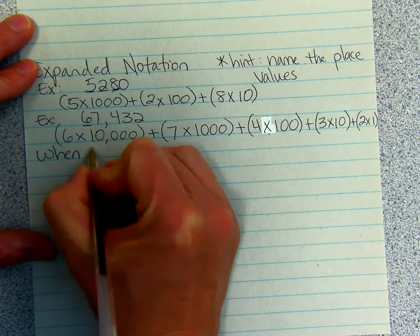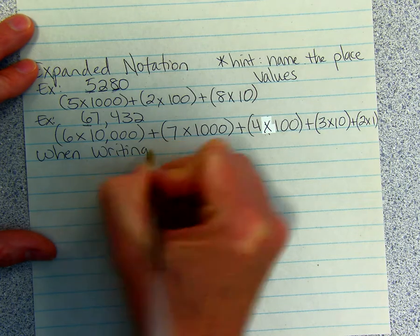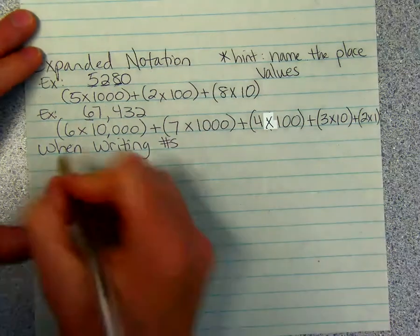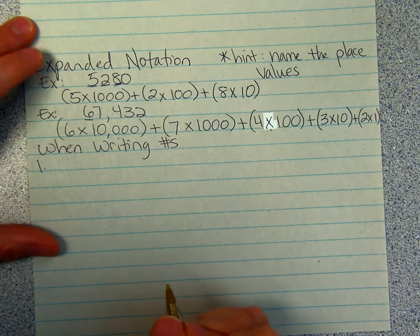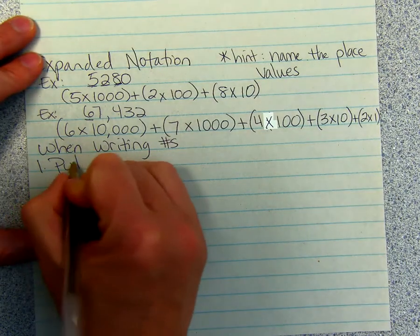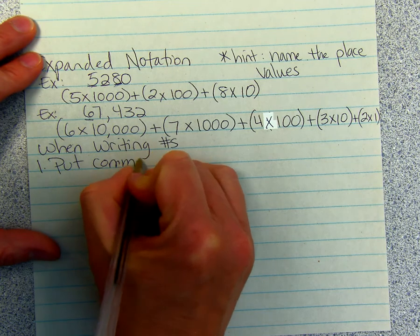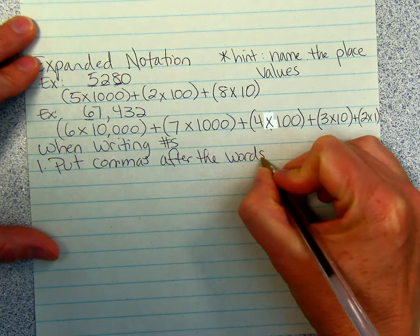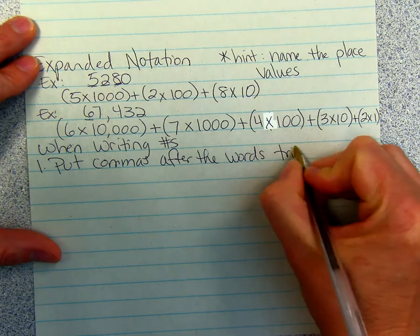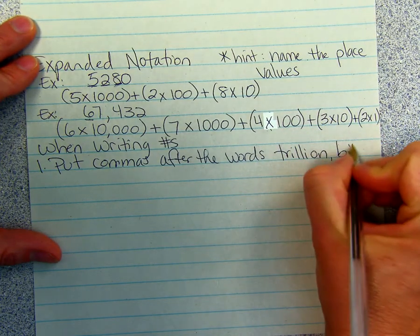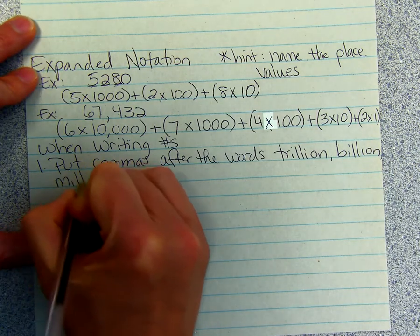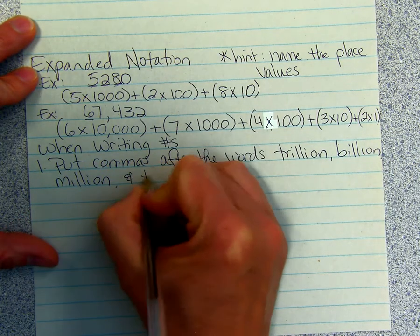When writing numbers, the first thing you have to know is to put commas after the words trillion, billion, million, and thousand.